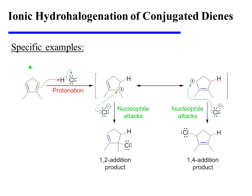When the dimethyl cyclopentadiene shown here is treated with HCl, it is protonated in only one way due to its symmetry. Either the red or the blue pi bond may be protonated, but either would be protonated so as to afford the same conjugated or allylic carbocation.